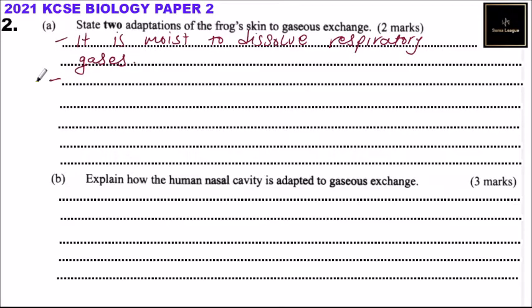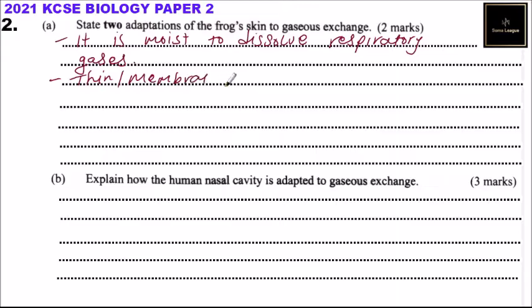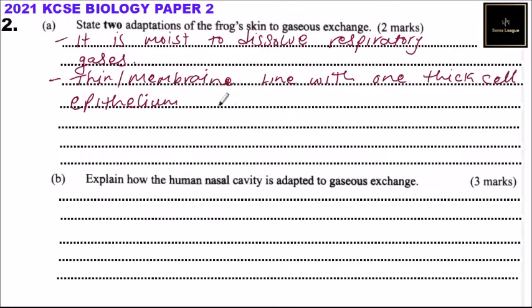The other adaptation is it has a thin membrane lined with one layer of epithelium — which we call epithelium — to reduce the diffusion distance.